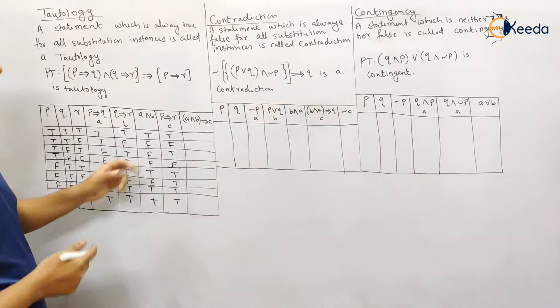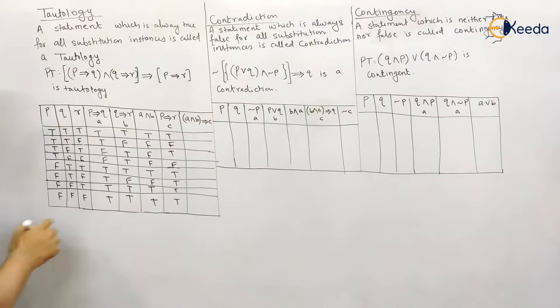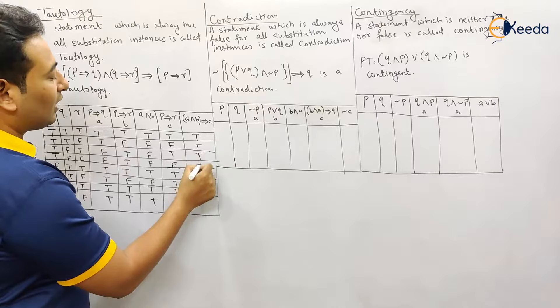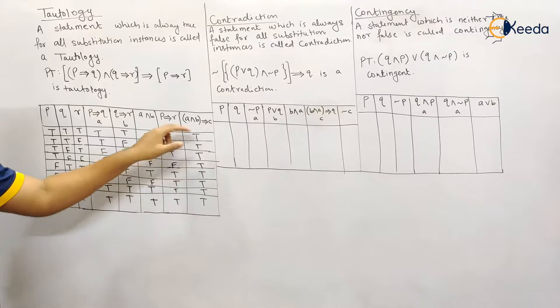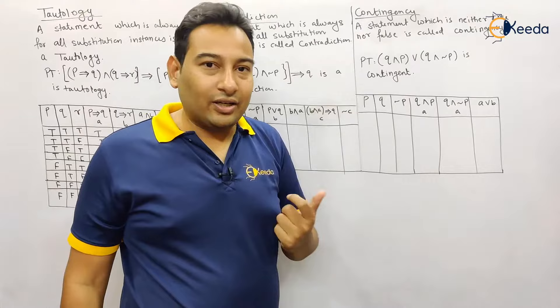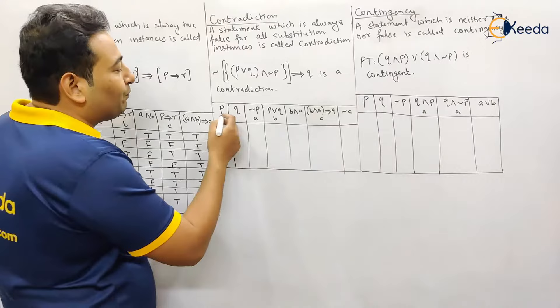Finally, we have A and B implies C — that is, (p→q)∧(q→r) implies (p→r). Wherever we get T→F that is false, but we are not getting that combination anywhere — all instances are true. A tautology is a statement whose value is true for all instances, therefore this is a tautology.